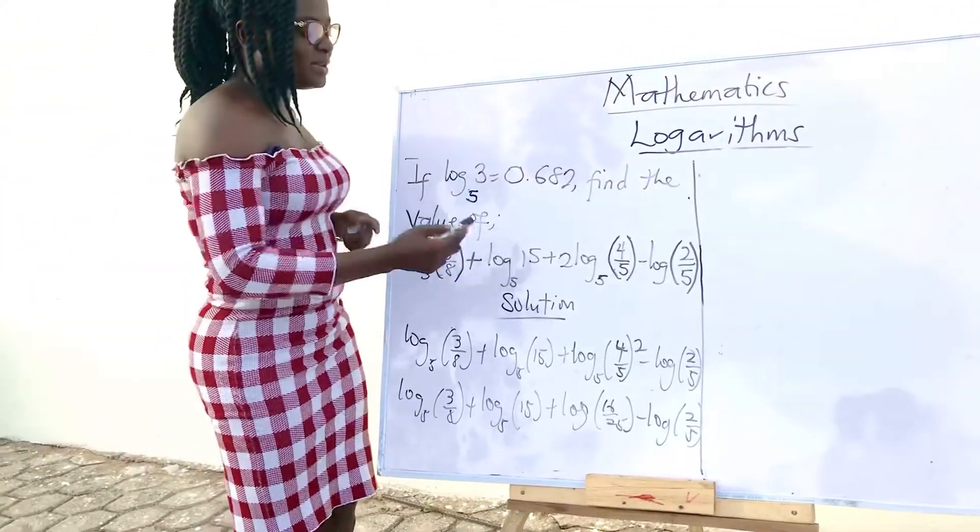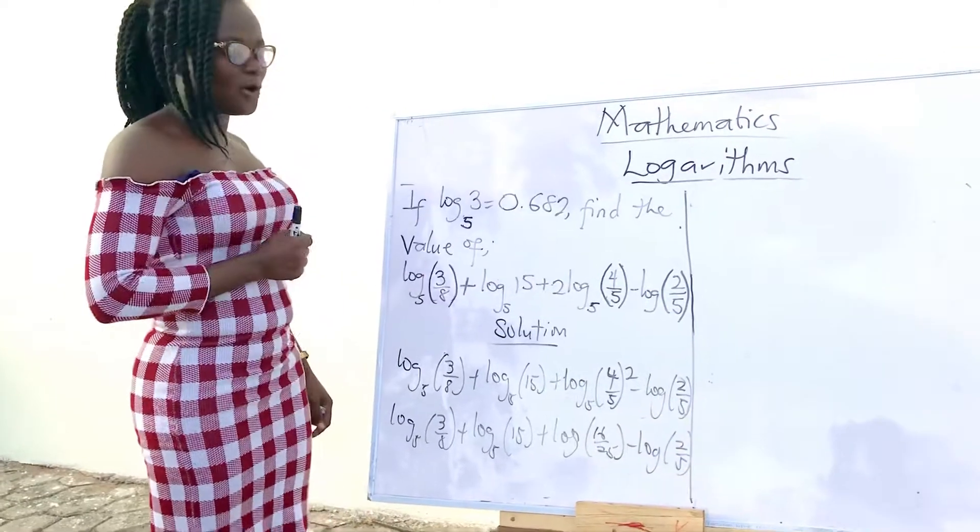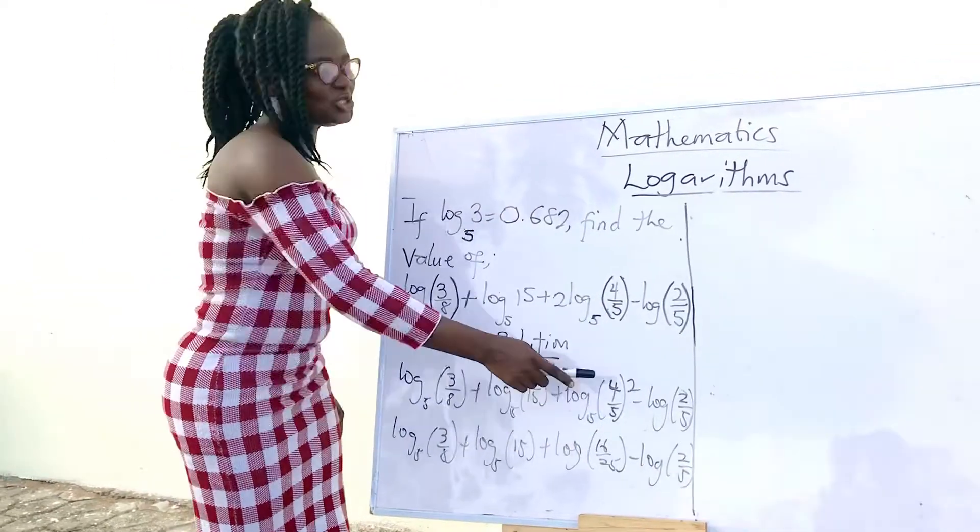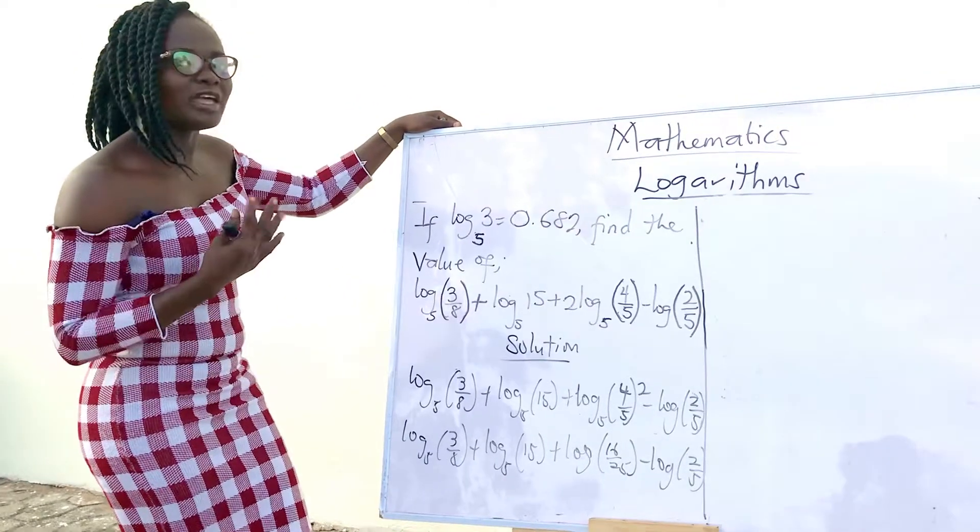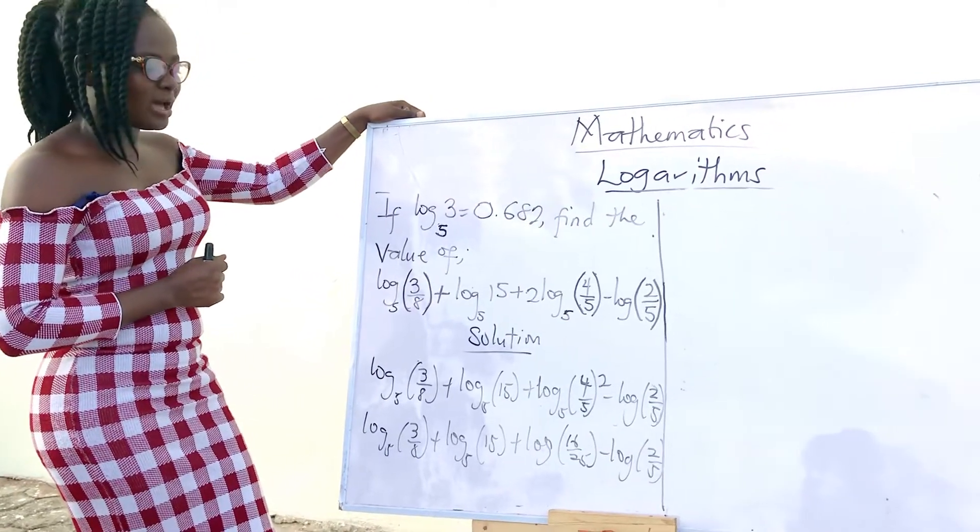So, expanding this becomes 2 times 4, which is 16, then 2 times 5, which is 25.